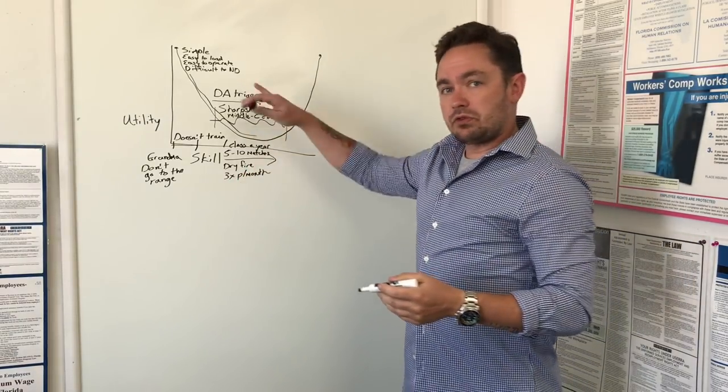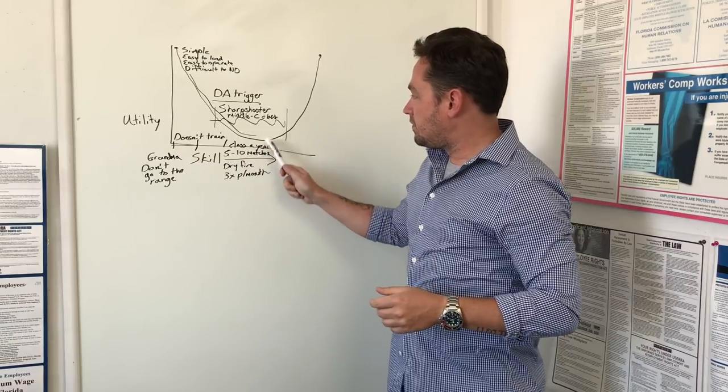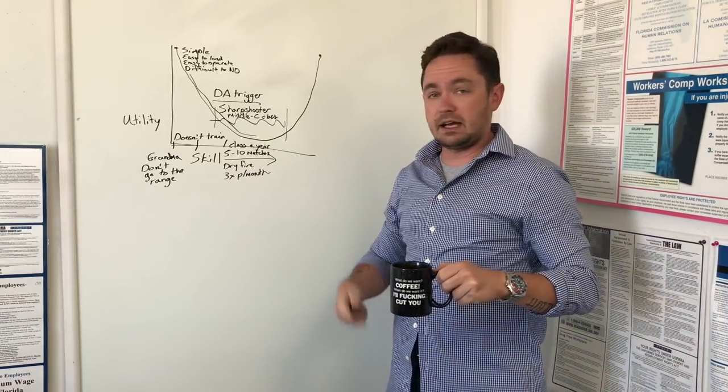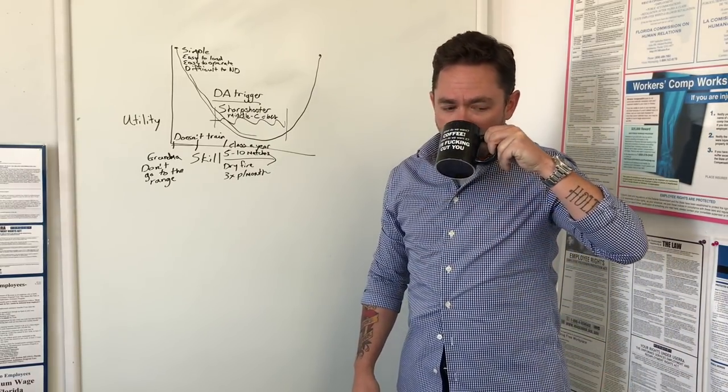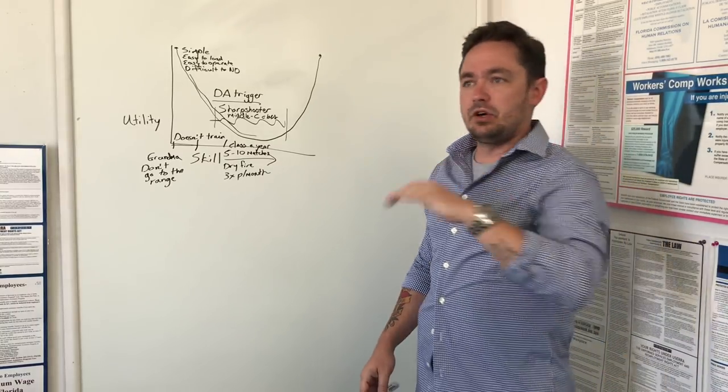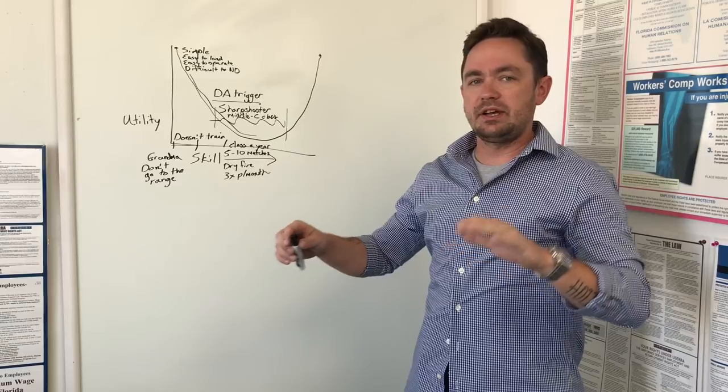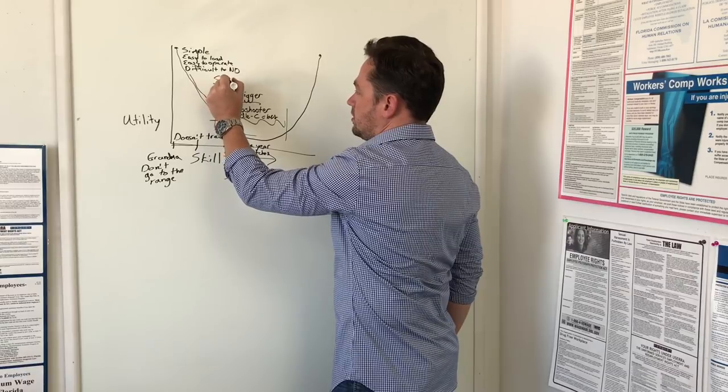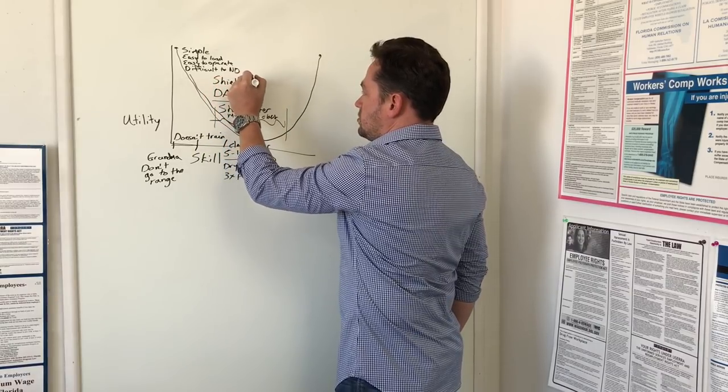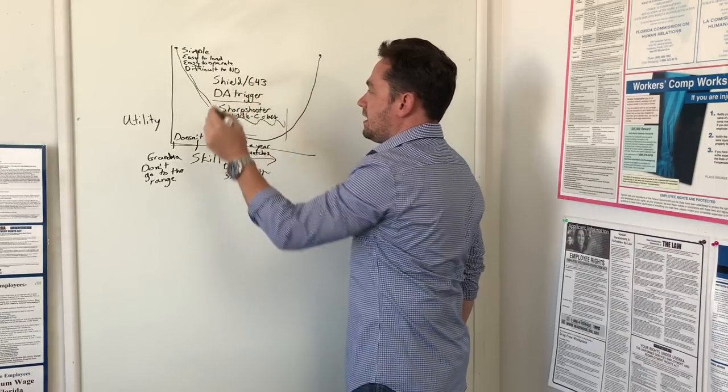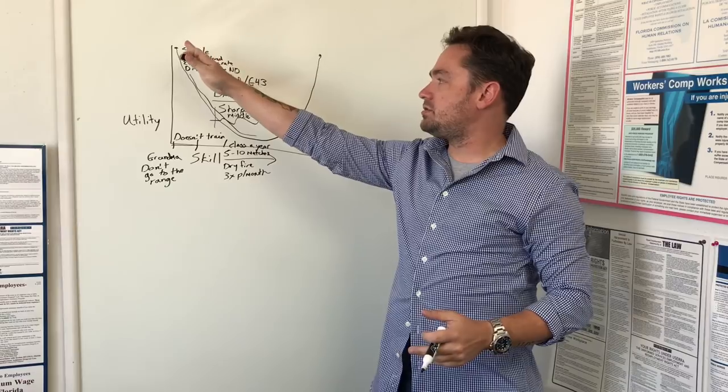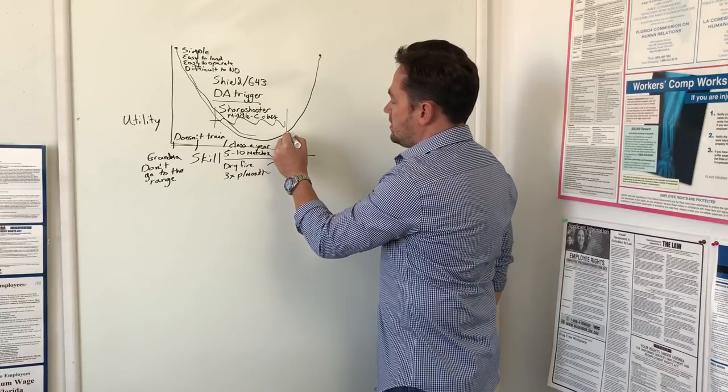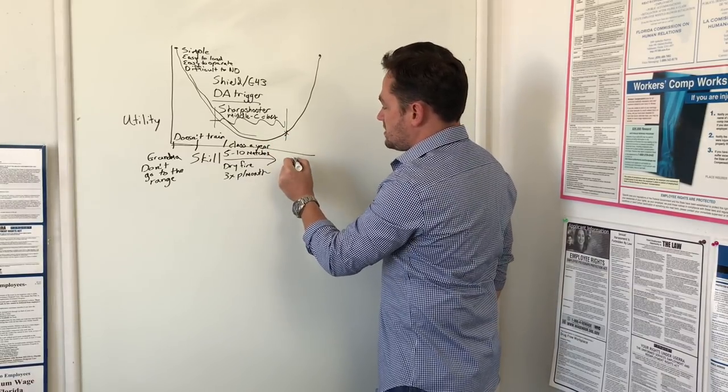So in this skill band, the return on investment that you're going to get from this level of investment is going to give you really great results with guns like a Glock 43 or an M&P Shield, because those guns are easier to shoot well than a small compact double action revolver. So here's your Shield, G43 dudes in this band. You're going to get better return on investment. So that's why the utility of these guns has started to fall off. Now you come out here, and this is the specialist category.